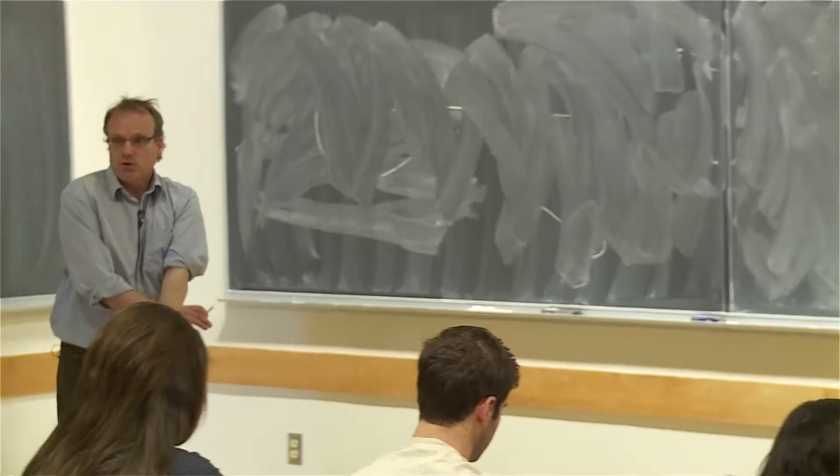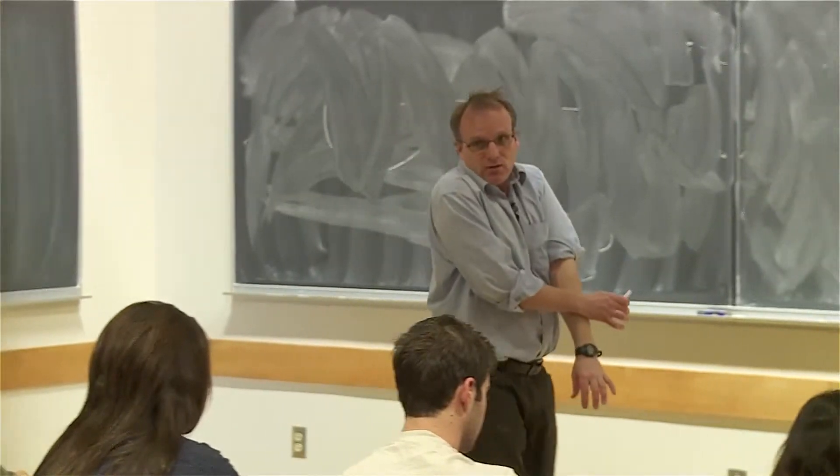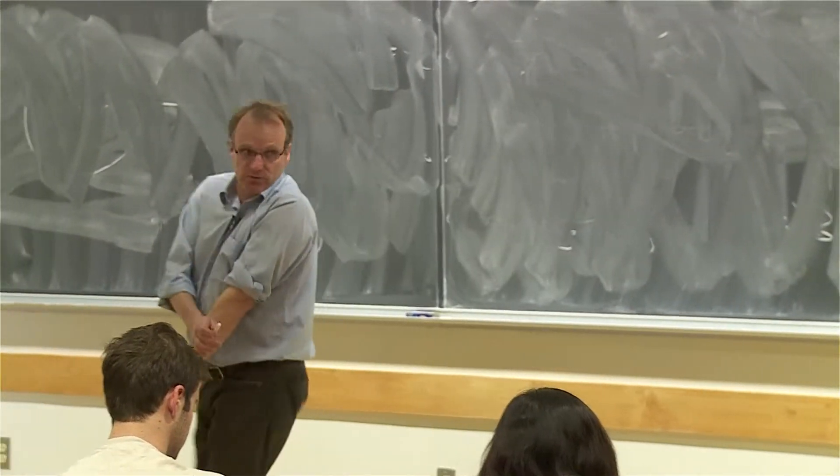So in the case of the Earth going around the Sun, the gravitational force is the thing that makes it go in a circle. Why? It seems very weird. Basically, it's because it's perpendicular to the velocity.